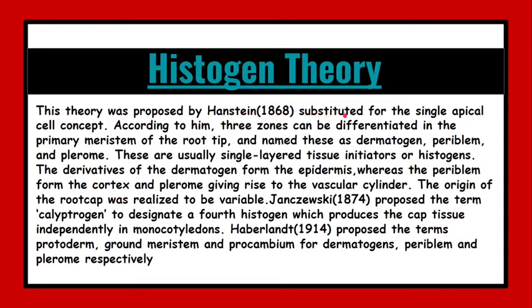The second theory is histogen theory. This theory was proposed by Hanstein in 1868. According to this theory there are three zones which can be differentiated: dermatogen, periblem, and plerome. These are usually single layer tissues or initiators also known as histogens. The derivatives of dermatogen form the epidermis whereas periblem forms the cortex and plerome gives rise to the vascular cylinder.